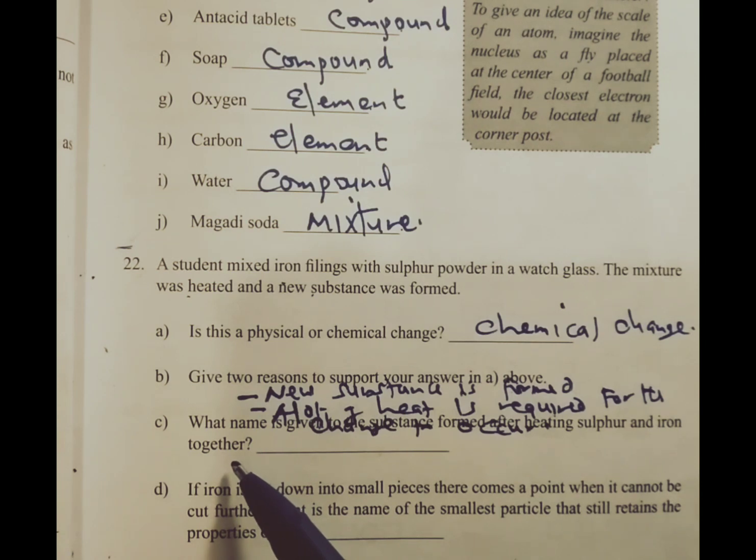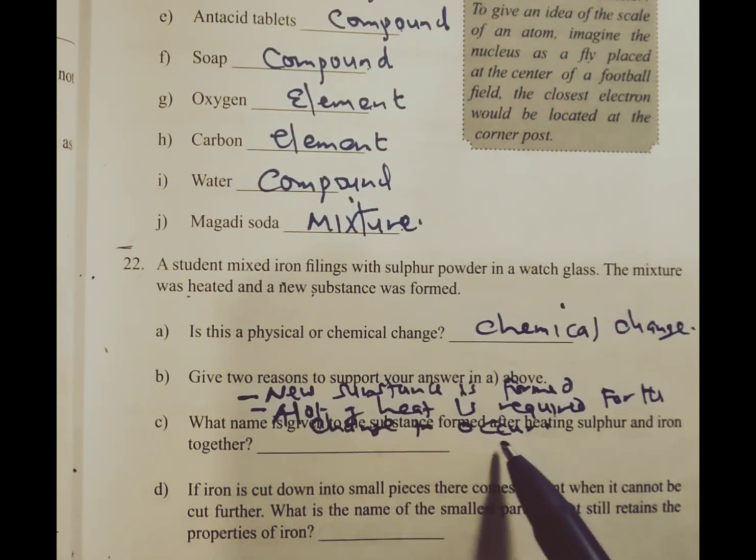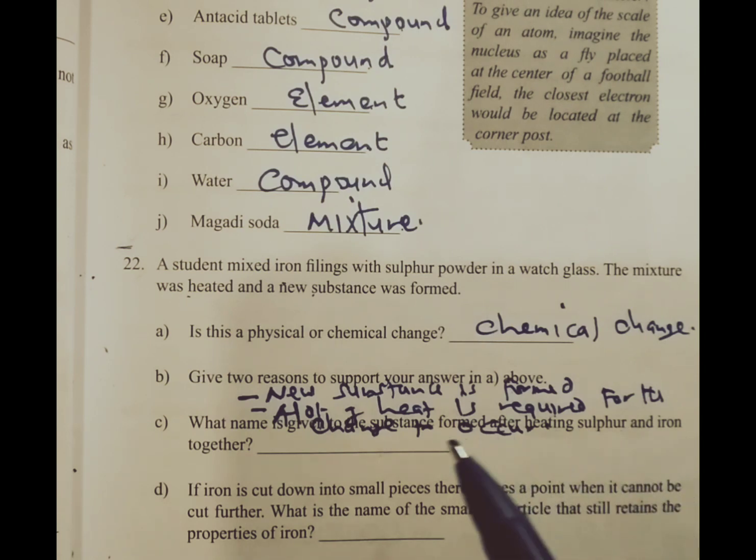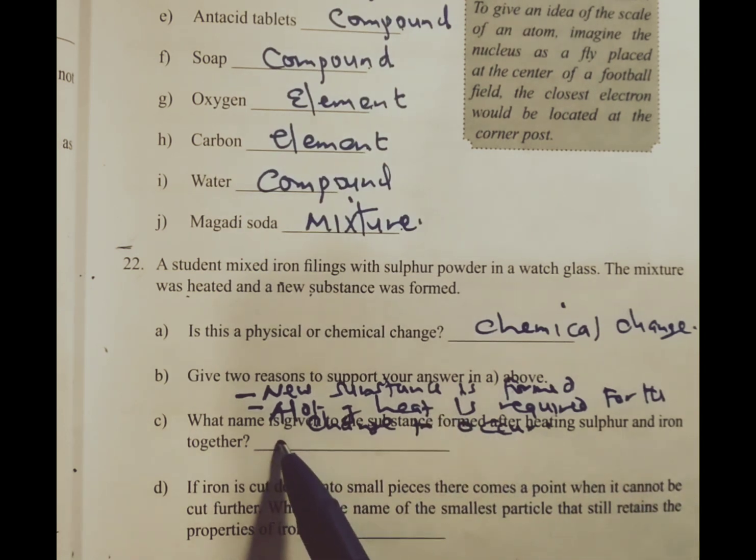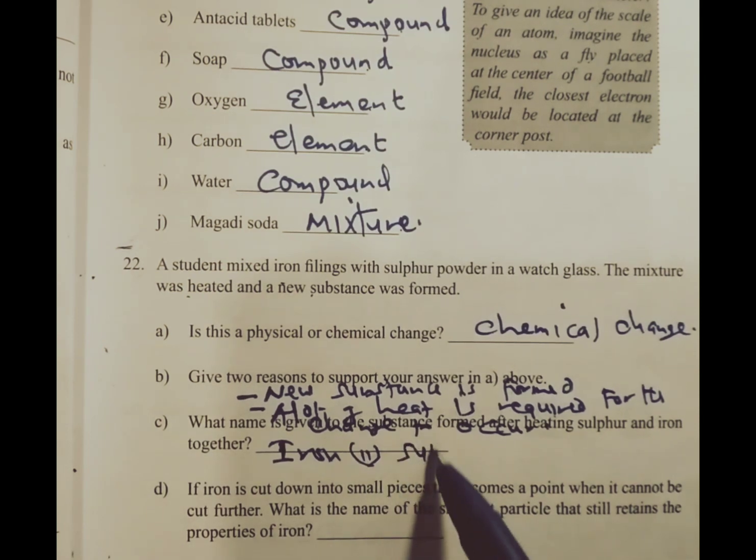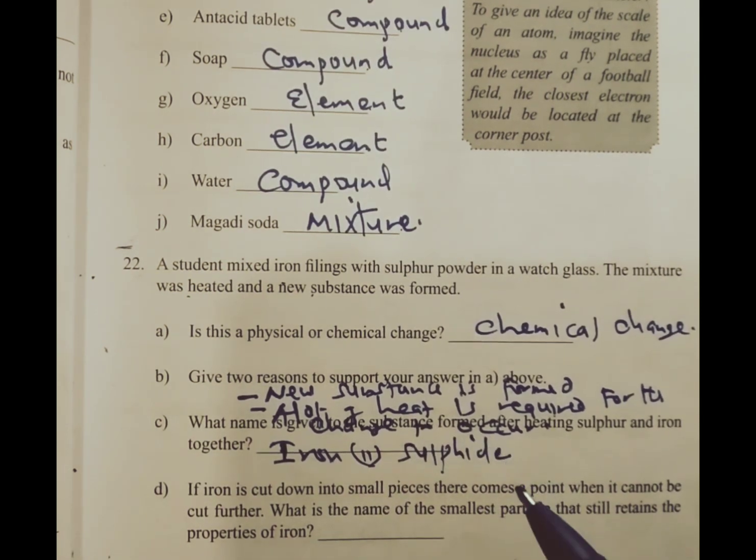See, what name is given to the substance formed after heating sulfur and iron together? Sulfur and iron together form iron(II) sulfide. Iron(II) sulfide, which is a compound of iron and sulfur.